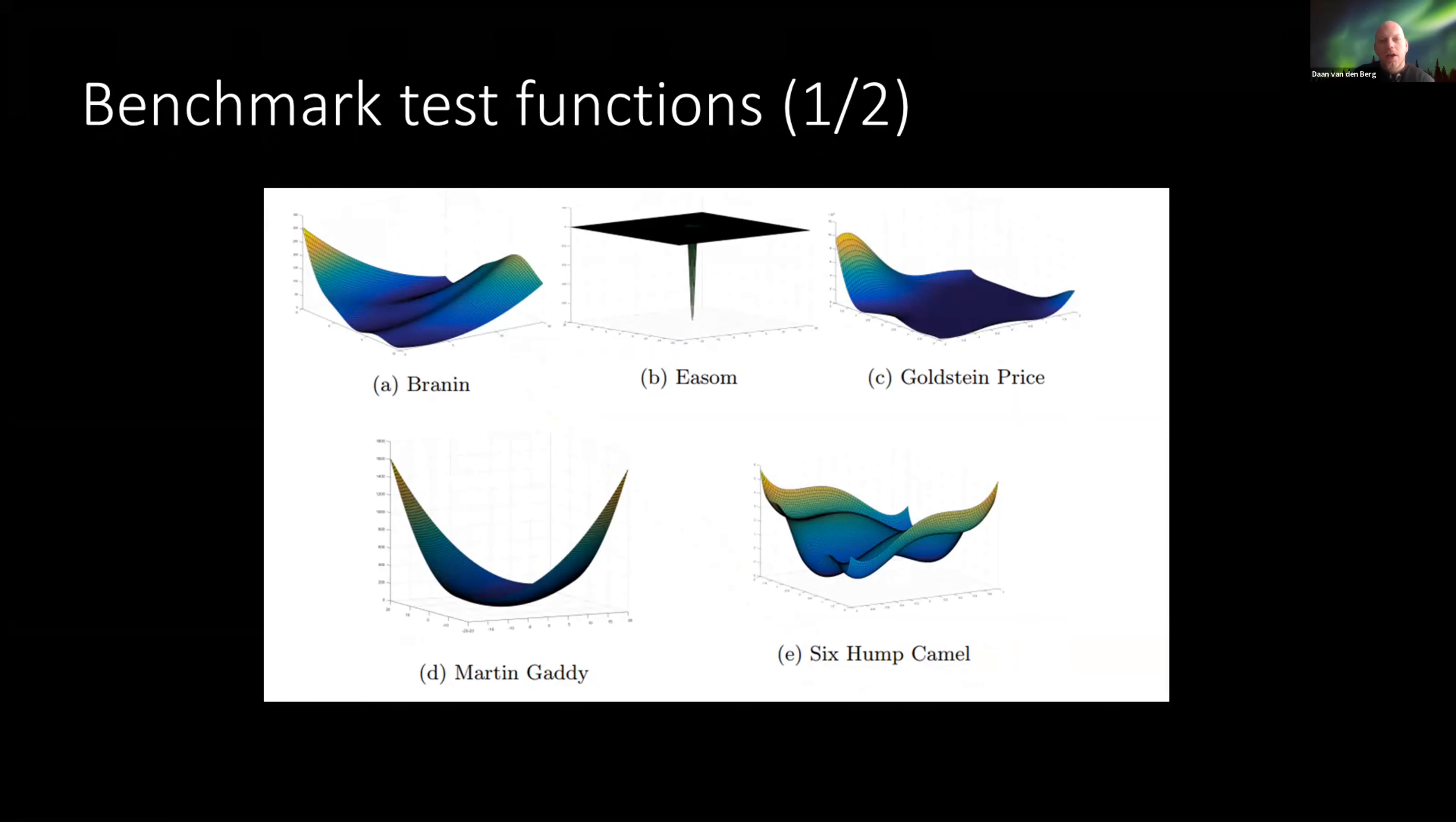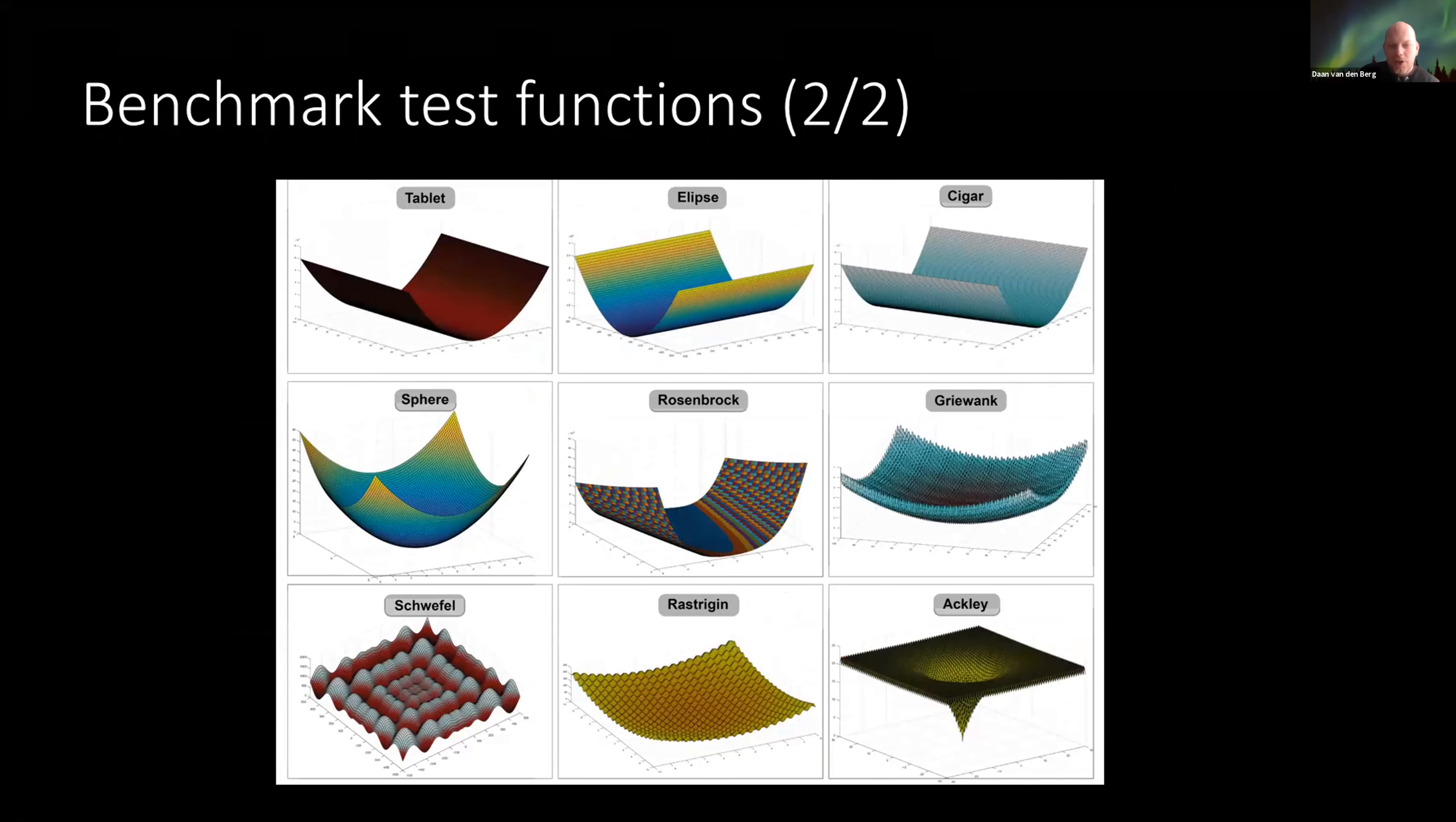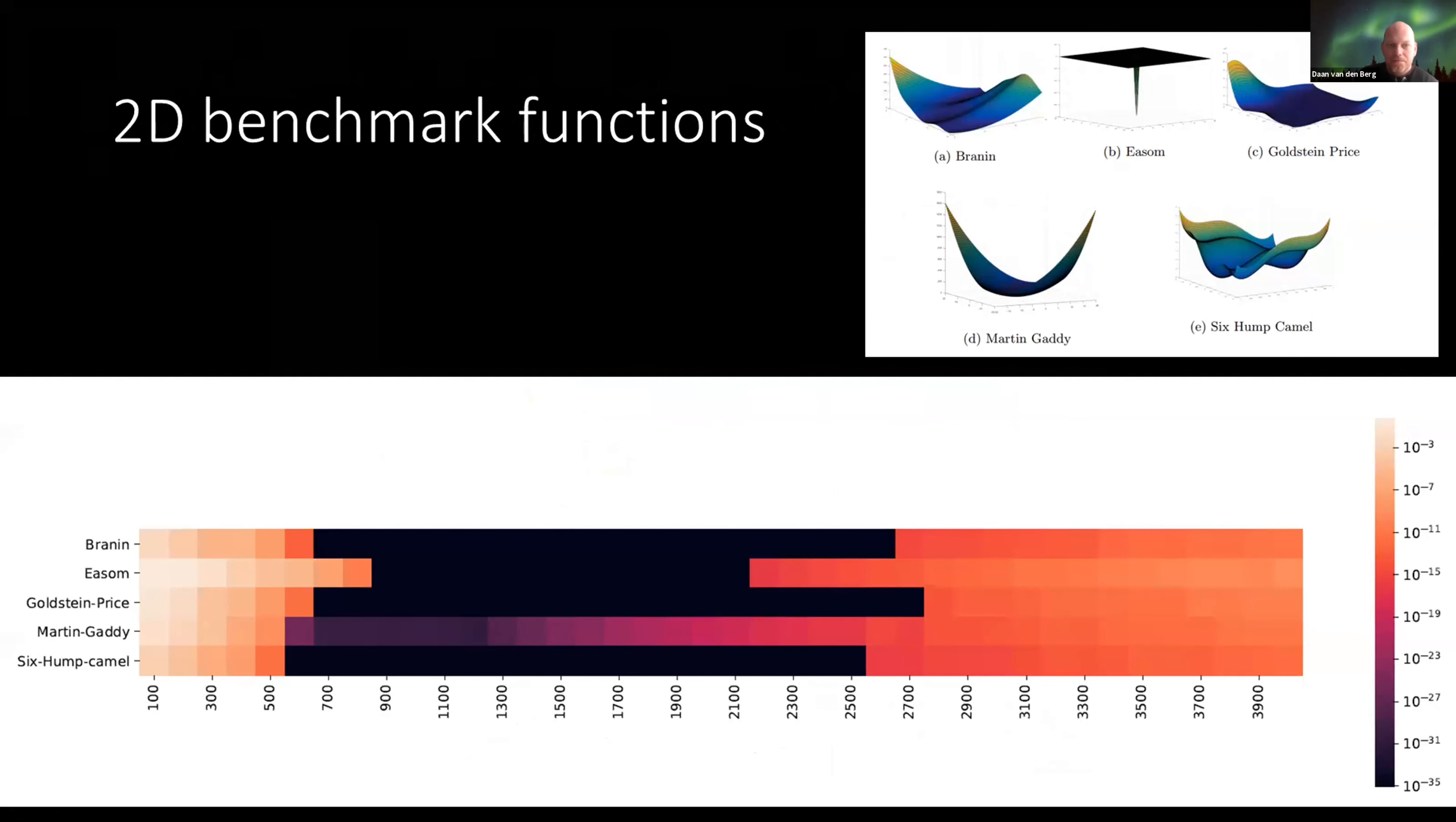We've seen these before - these are 2D functions that we used and we have the n-dimensional functions. Here are some results on the 2D benchmark test functions. What you see on the horizontal axis is the slowness of the steepening process of the fitness function. Right here the fitness function goes really fast from this to that, and here at the end it goes really slowly throughout iteration from this to that. The darker a cell is, the lower the end value. Black means 10 to the power minus 35, which is largely equivalent to the absolute zero of the benchmark test function.